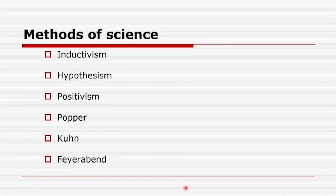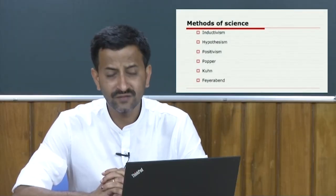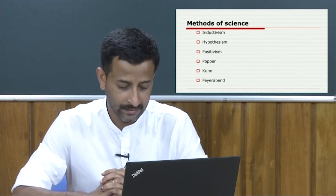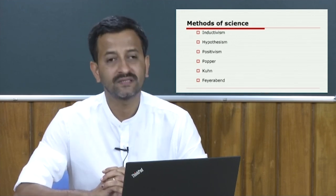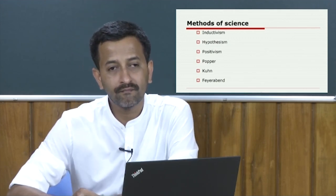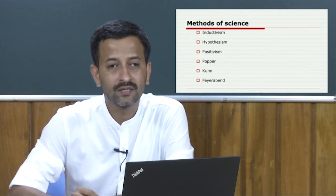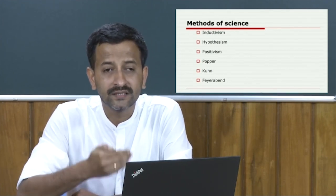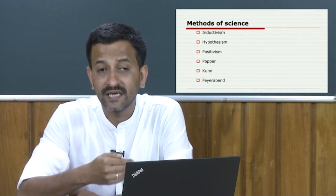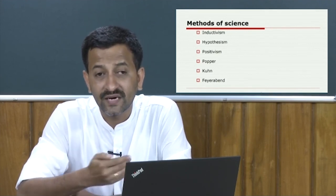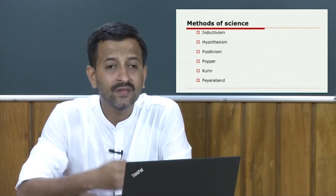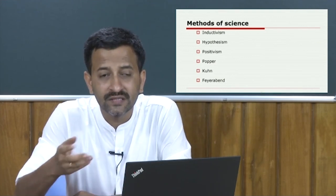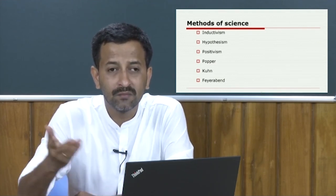With the emergence of modern science and modern philosophy in the 17th century, the question — what is the method of science — was raised afresh. It is very important to understand the context of the Enlightenment, the context of rationality, critical thinking, reasoning capacity, industrial revolution, changes in the mode of production, and the ability to interrogate existing structures including religion and the dominance of the church.